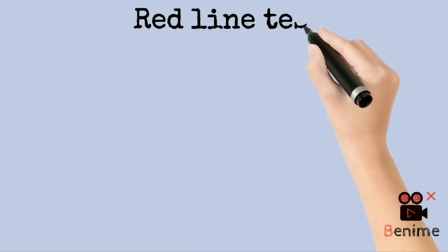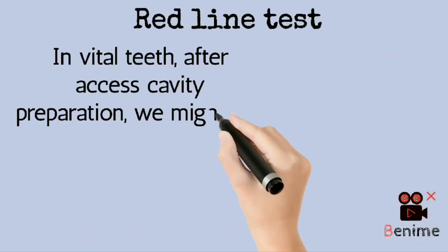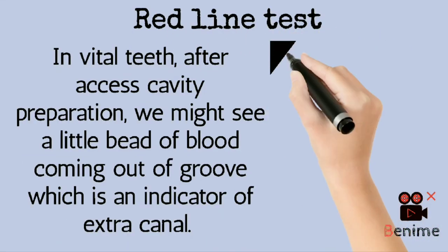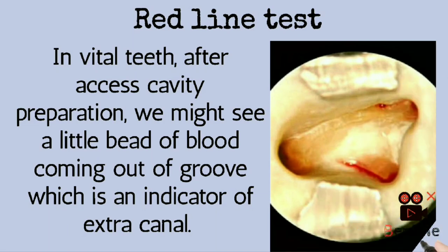Another test is the red line test, which is an exclusive test for vital teeth. In a vital tooth, blood frequently oozes out from an orifice, fin, or an isthmus area after access cavity preparation. This bead of blood serves to indicate and identify the underlying anatomy below the pulpal floor.